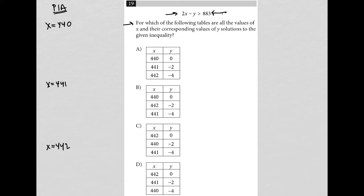If x is 440, my inequality 2x minus y is greater than 883 becomes 2 times 440, so 880 minus y is greater than 883, and negative y is greater than positive 3.